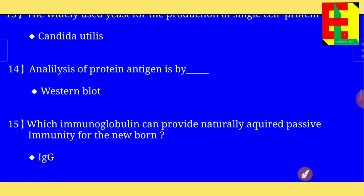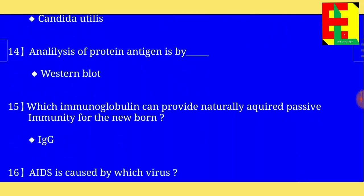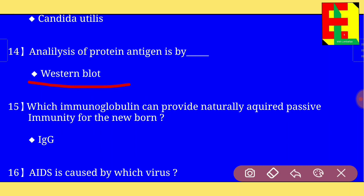Question number fourteen: analysis of protein antigen is by — the answer is — the analysis of protein antigen is by western blot.